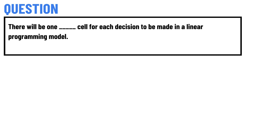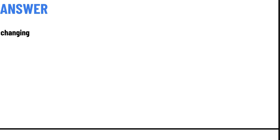Today's question is: there will be one cell for each scene to be made in a linear programming model. The correct answer to the question is 'changing.'